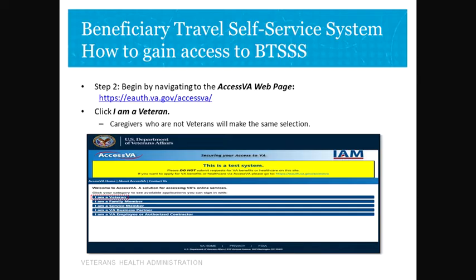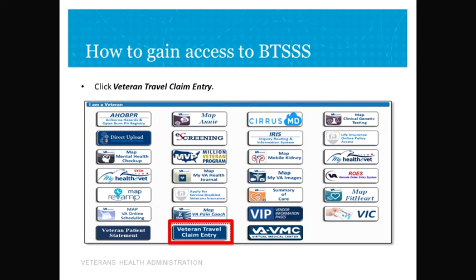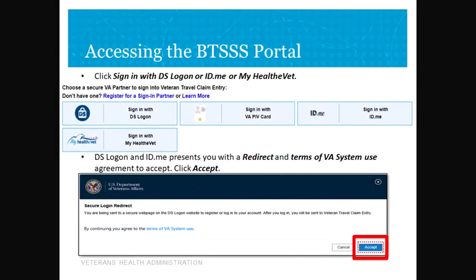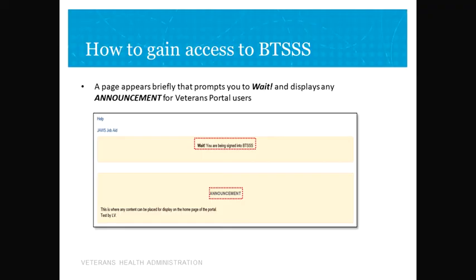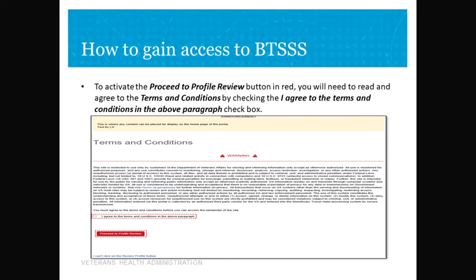A quick reminder on how to access your BTS3. You will go to the Access VA webpage and choose 'I am a Veteran.' You will then select the Veteran Travel Claim Entry icon. Log in using your DS-Logon, ID.me, or MyHealthyVet username and password, and accept the secure logon redirect. You might have to wait for BTS3 to load. Then you will read and agree to the terms and conditions by checking the box next to 'Proceed to Profile,' and then hit the Continue button.